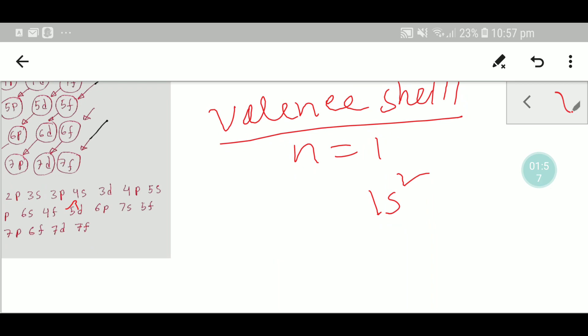The electrons of the valence shell are called valence electrons. That's why helium has 2 valence electrons. Thank you for watching this video.